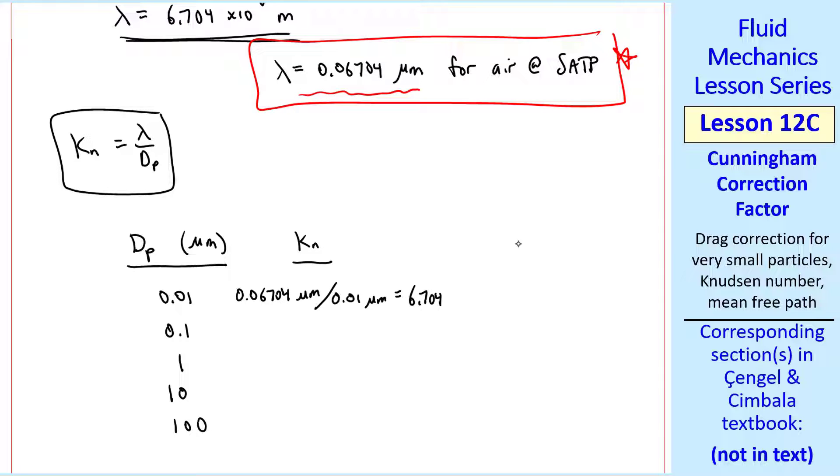For the first one, we get 6.704. And since diameter is going up by a factor of 10, Kn goes down by a factor of 10, since dp is in the denominator and lambda is a constant at SATP. So these are the answers to this example problem.